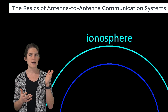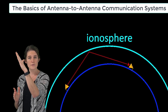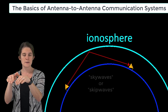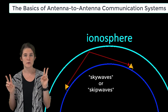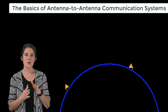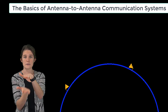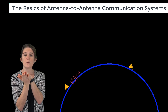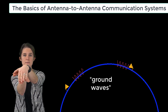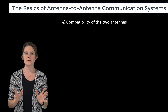At certain frequencies it is possible to bounce a signal off the ionosphere to the target, allowing transmission past the horizon. These are called sky waves or skip waves. Another workaround is that at certain low frequencies, waves can be trapped in the dielectric interface between air and dirt to produce surface waves that hug the earth and bend past the line of sight. These are called ground waves.